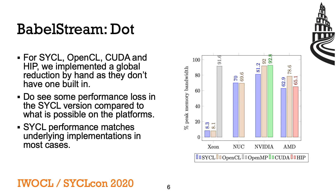The dot product kernel requires a simple summation reduction operation, which has to be implemented manually in SYCL, OpenCL, CUDA and HIP. For each model, we've implemented the typical commutative parallel tree reduction, storing a partial result from each work group in local memory, to use the terminology from OpenCL and SYCL. The final reduction is performed on the host. OpenMP gives first-class support with a built-in global reduction, which we use here.